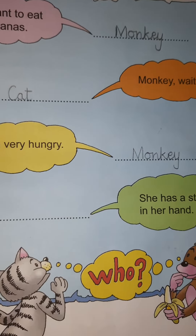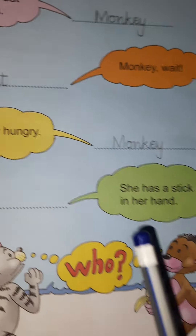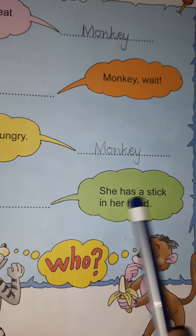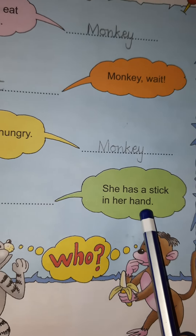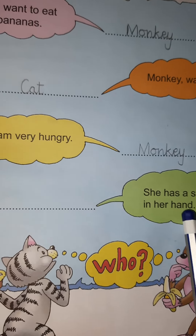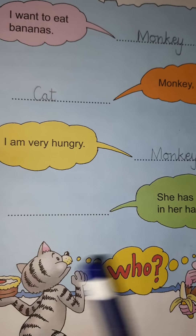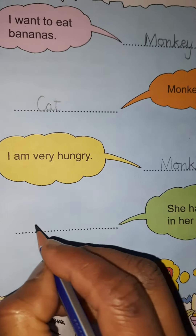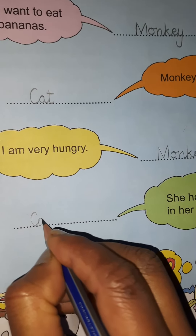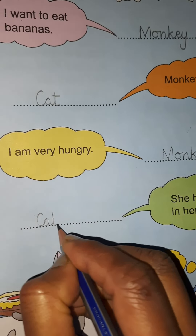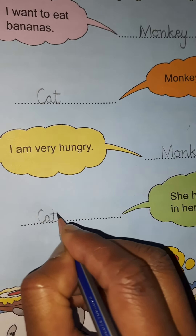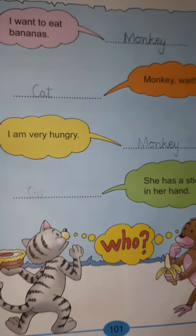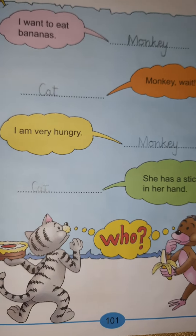Okay, and the last one is, She has a stick in her hand. Yes, Cat said this. So write Cat in the blank. Very good. Well done, children. Bye.